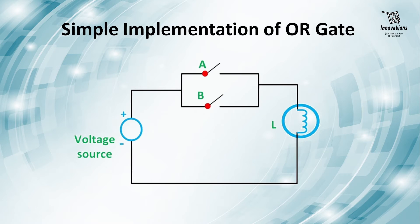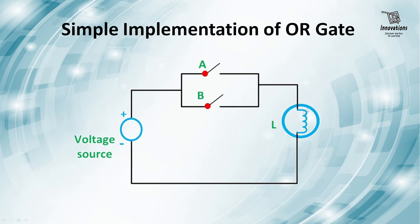We can implement an OR gate with a very simple switching circuit. Using a voltage source, two switches connected in parallel feed output to a lamp. If any of the switches are turned on, the output will be high and the lamp will glow. If both switches are on, the lamp will also glow. But if neither switch is on, the lamp will not glow. This is a simple implementation of an OR gate.